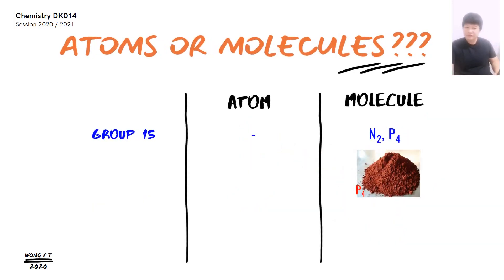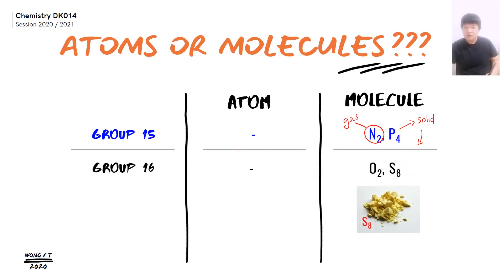Group 15 element exists in the form of molecule. Nitrogen exists in the form of gas at standard condition, whilst phosphorus exists in the form of solid. Group 16 also exists in the form of molecule, where you have your oxygen gas and also you have your sulfur solid.